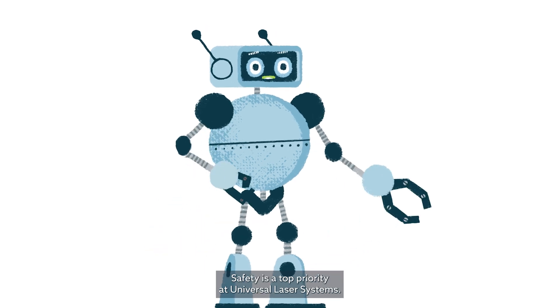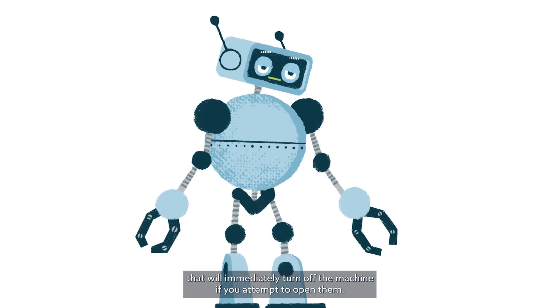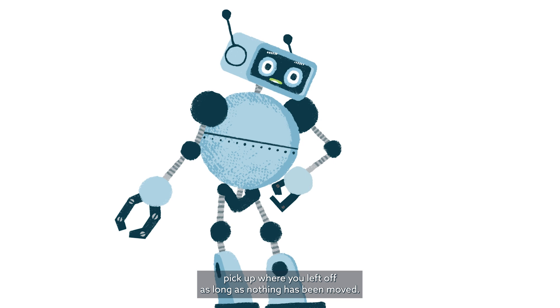Safety is a top priority at Universal Laser Systems. These machines are equipped with door safety locks that will immediately turn off the machine if you attempt to open them. And if you need to stop the job for any reason, you can easily pick up where you left off as long as nothing has been moved.